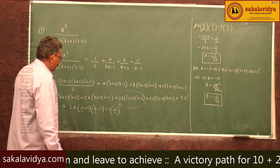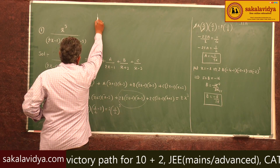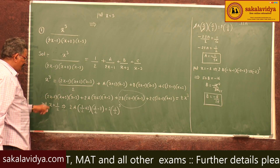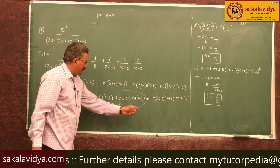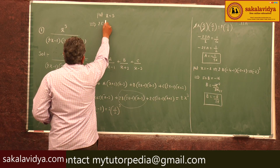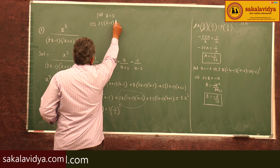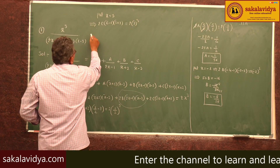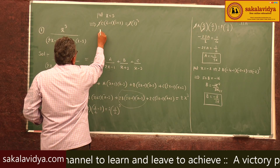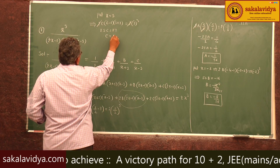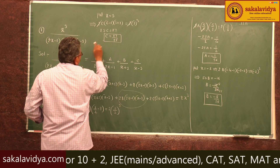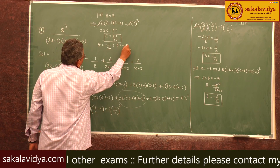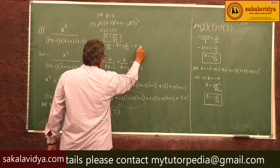Next substitution: put x = 3. The other terms become 0, leaving 2C·(6-1)·(3+2) = 2·(3³). So 2C·5·5 = 54, giving 50C = 54, and the 2s cancel to give 25C = 27, so C = 27/25. We now have A = -1/50, B = -8/25, C = 27/25.